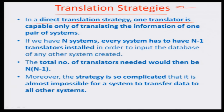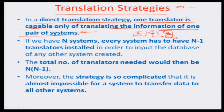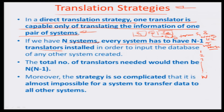In a direct translation strategy, one translator is capable only of translating the information between one pair of systems. If you have system S1 and system S2 with a translator T in between, that translator is only capable of reading from S1 and writing to S2, or vice versa. Obviously, if you have n systems, every system has to have n minus 1 translators — for example, translator T1-to-2 between systems 1 and 2, T1-to-3 between 1 and 3, and so on up to T1-to-n.